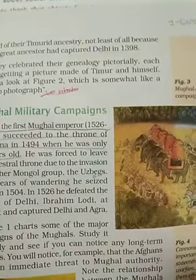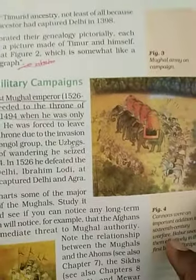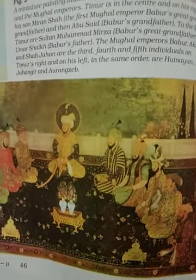In 1398, they celebrated their genealogy through paintings. Each ruler had a picture made of Timur and himself — look at Figure 2, which is somewhat like a group photograph. This is a photograph of Timur, his descendants, and the Mughal emperors. Timur is at the center, and on his right is his son.